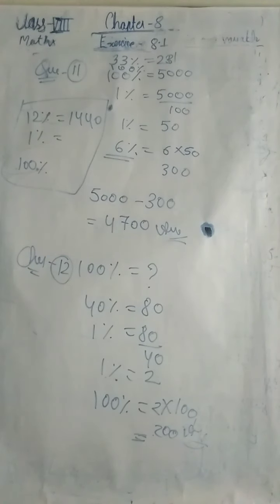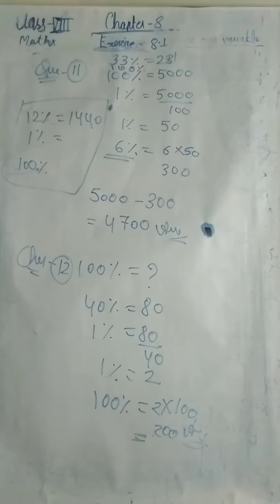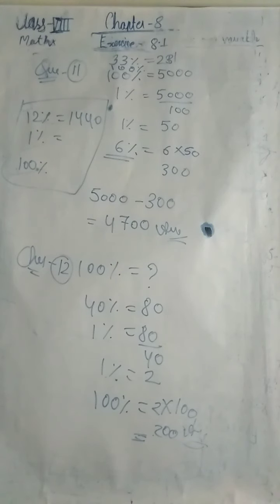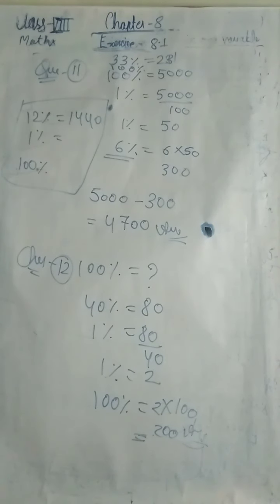Question number 15: a cyclist travelled 122 km before reaching a pit stop. If he had travelled 10% of his journey to complete at this point, how long was the total ride? The total ride equals 100%, so 122 km is 10%. Solve it the same way.